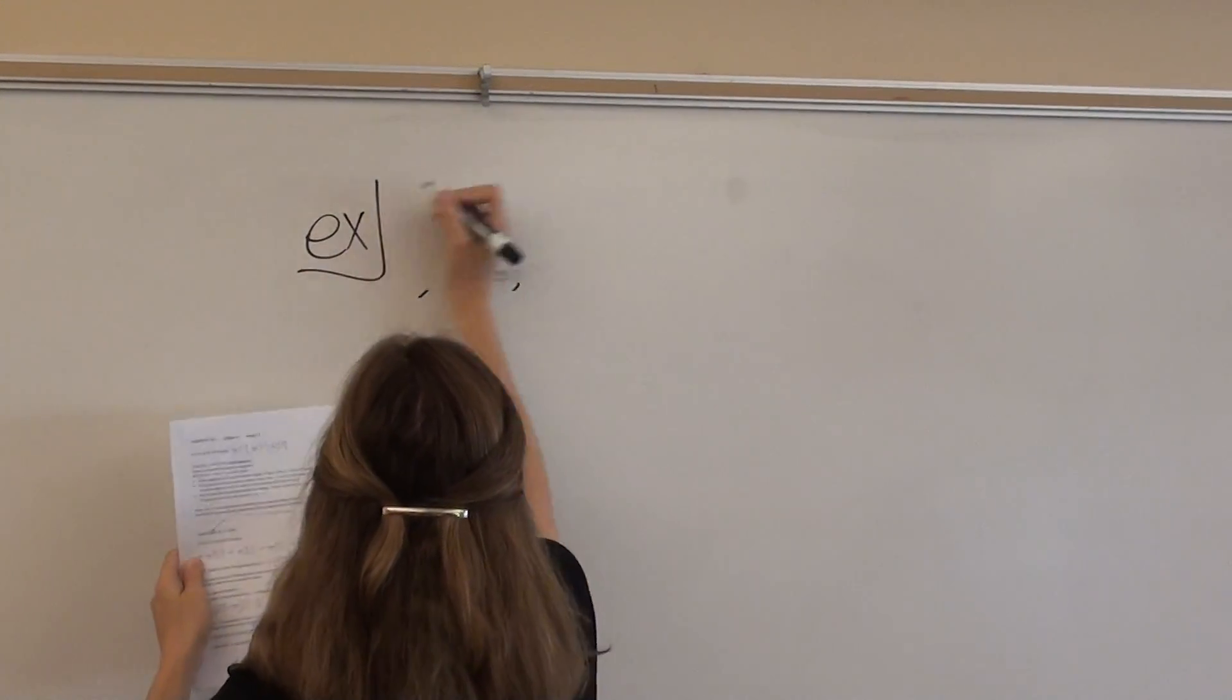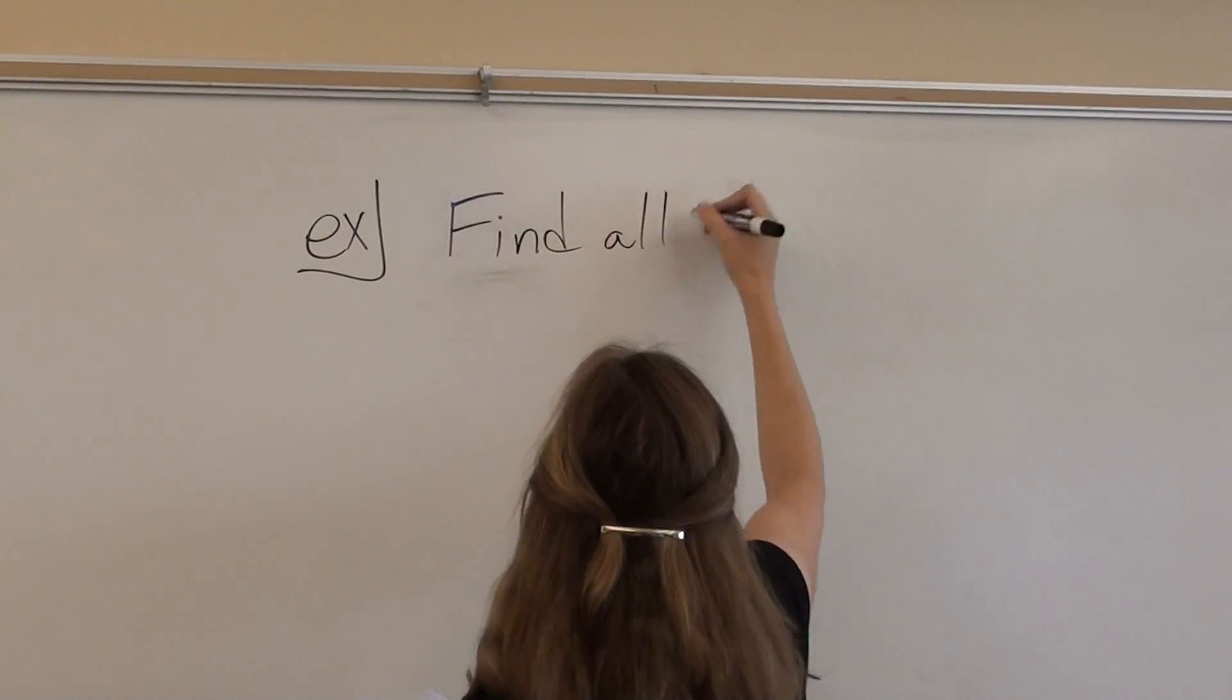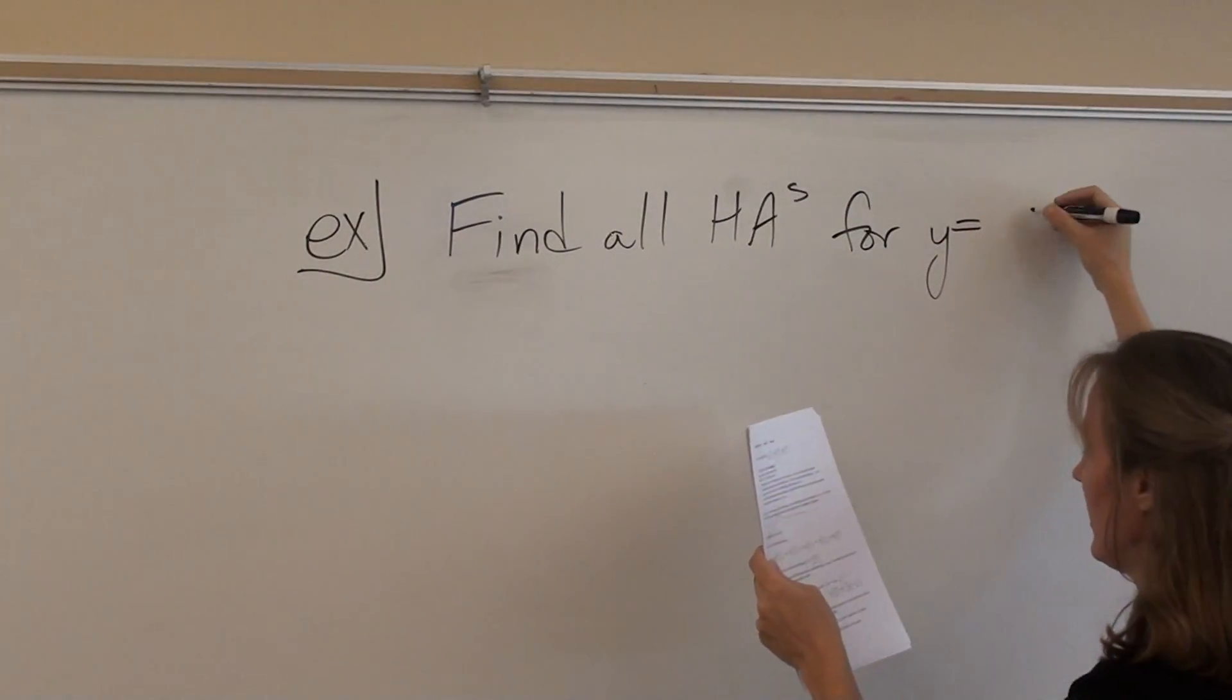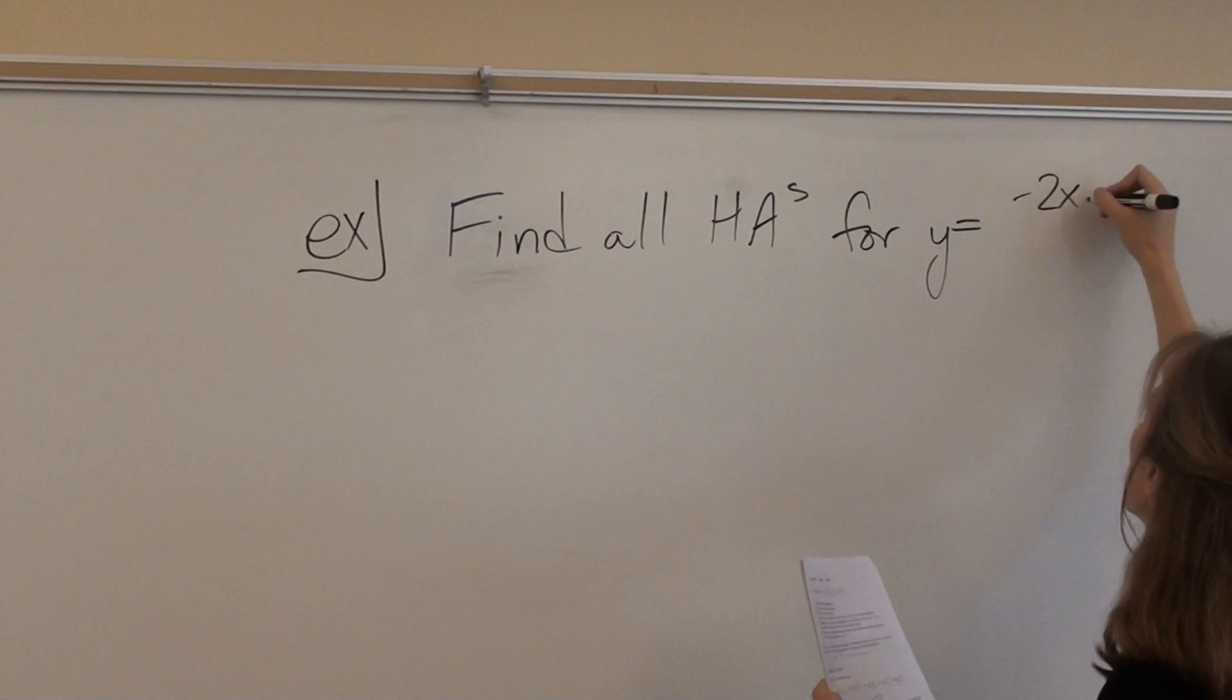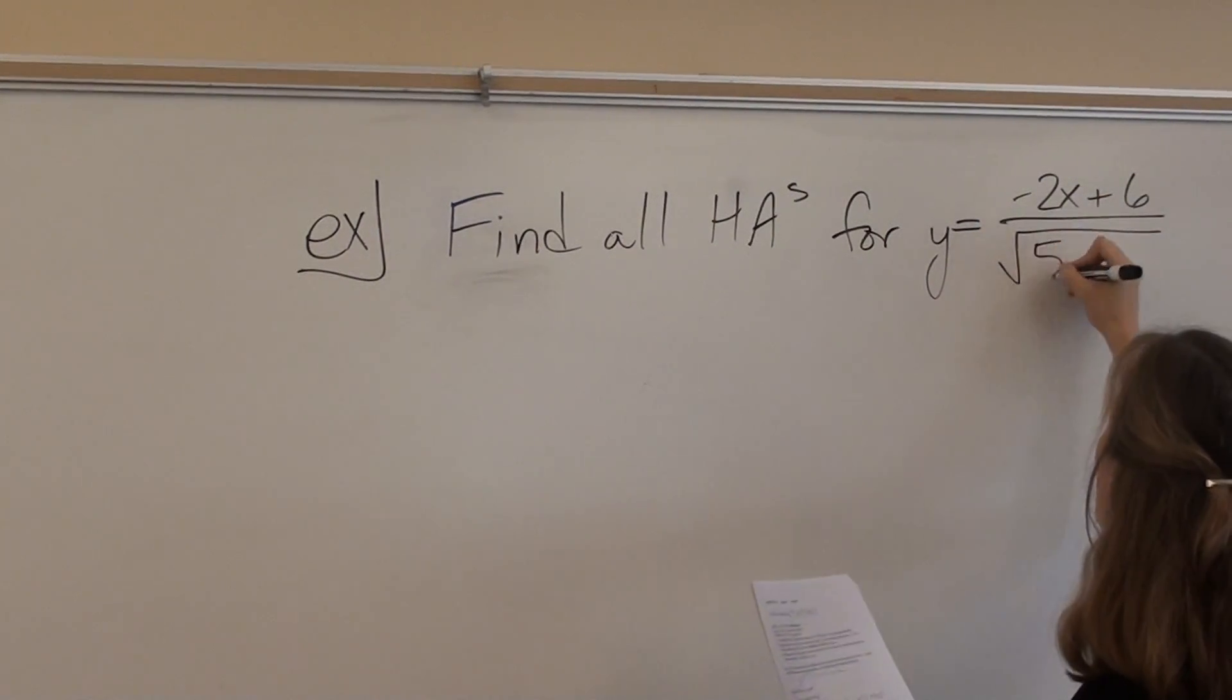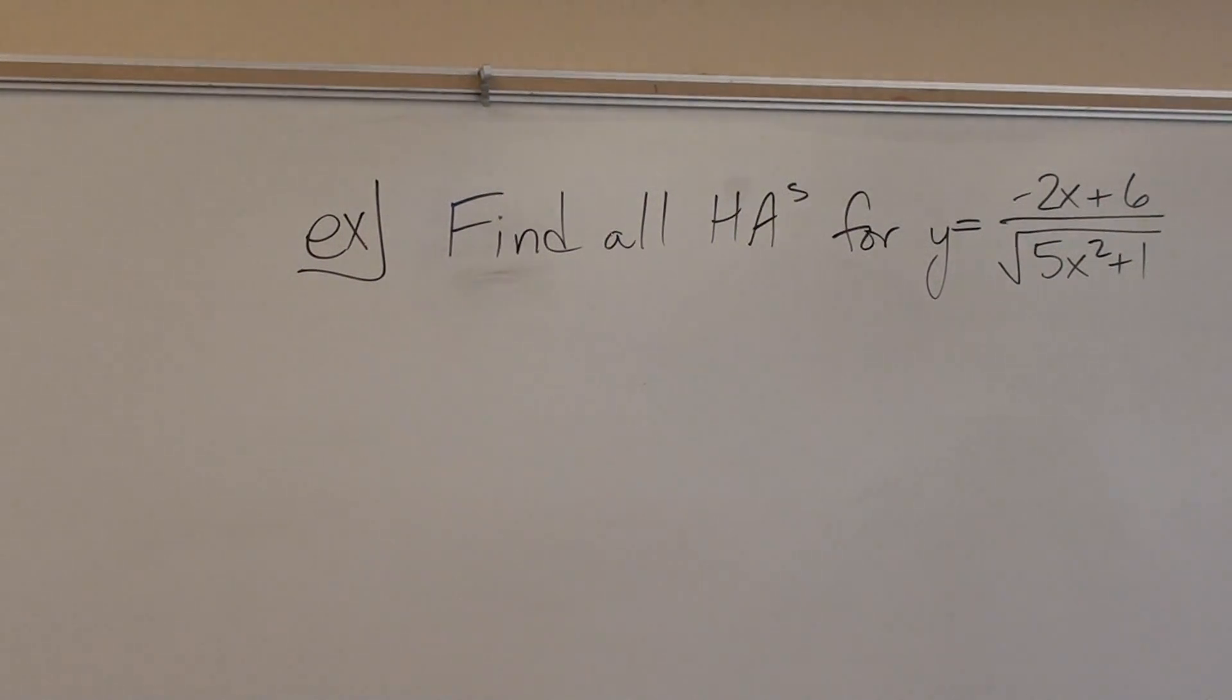There are so many different ways to approach these problems. You know what? I'm going to rewrite it first. I'm going to write it like this. Find all horizontal asymptotes for y equals negative 2x plus 6 over the square root of 5x squared plus 1. I think what we do is we square the top and bottom. Can you just square the top and bottom? Because then you'd get rid of your radical, right? And you'd have two polynomials.